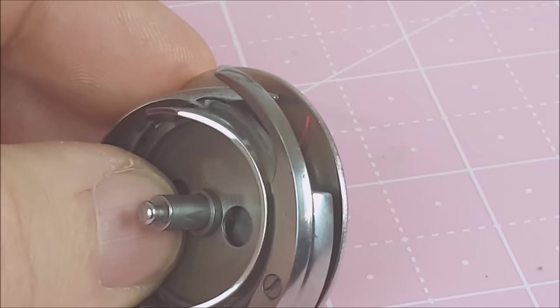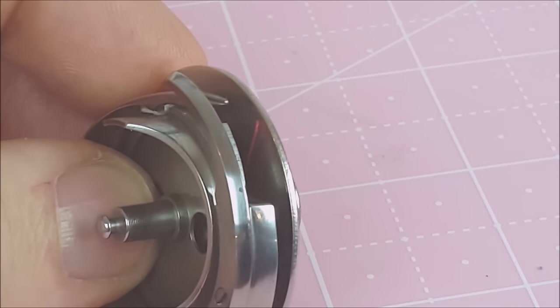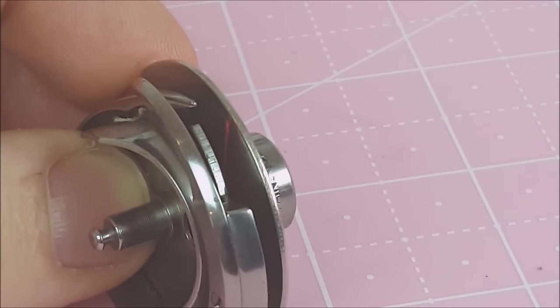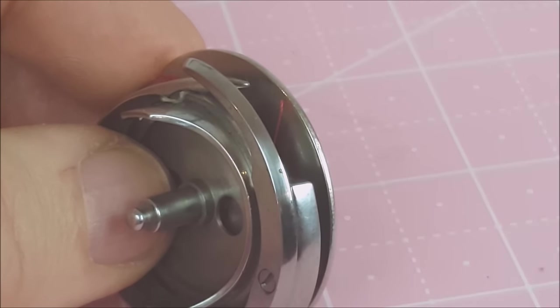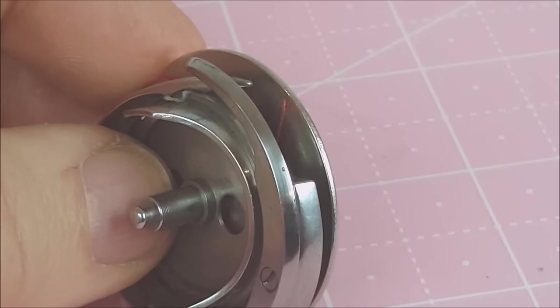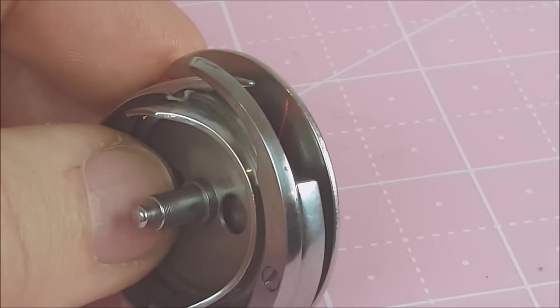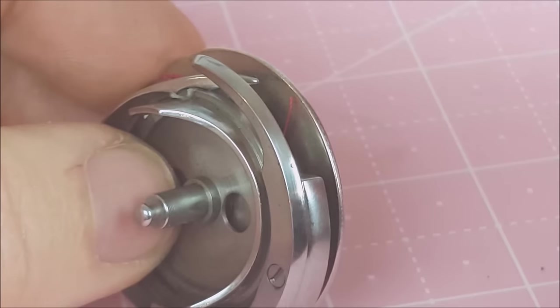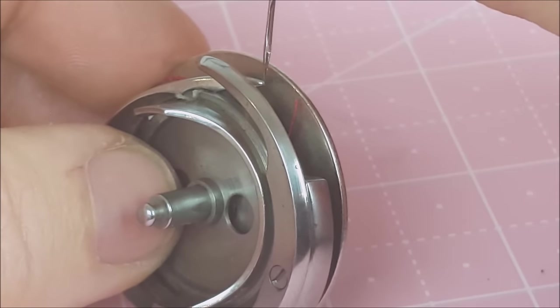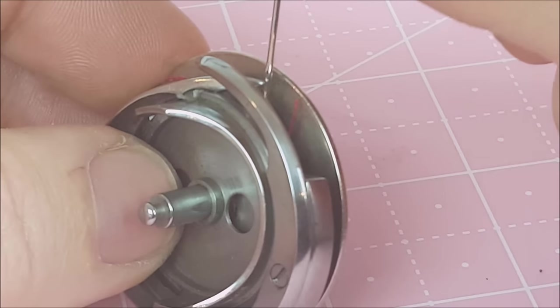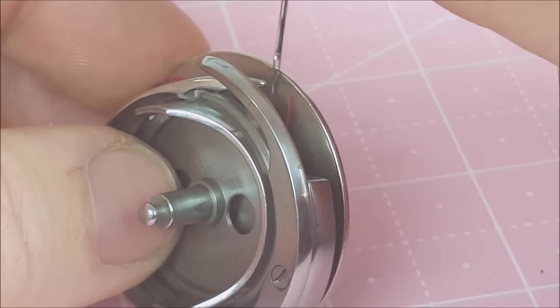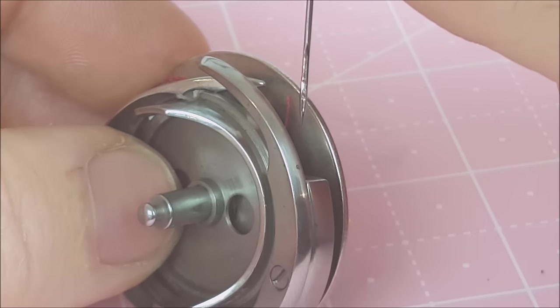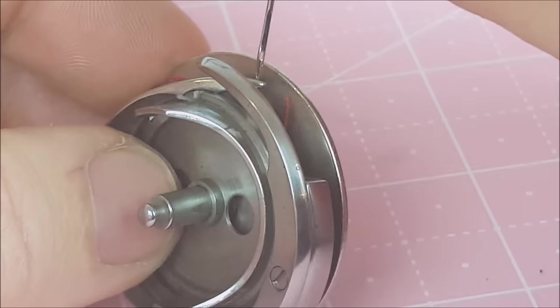Another common cause of skip stitches is thread caught in the hook assembly area. We can see here from this hook assembly that it's got some thread in there. This is usually caused by not holding your thread tails as you start or turning the hand wheel in the opposite direction. The hand wheel should always turn towards you. And so as the needle comes down and makes that little loop and we want the hook to pick up that loop, well if we've got this piece of thread that's whipping around in there it's going to push that loop out of position and cause you to have a skipped stitch.